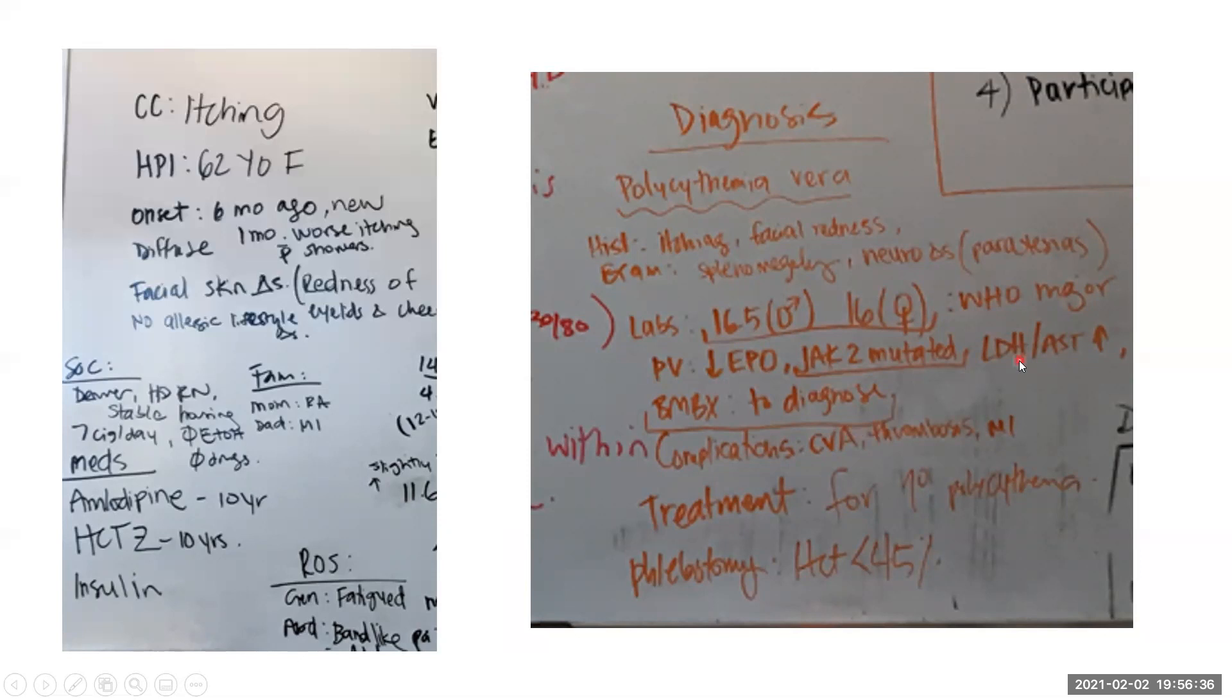Often, LDH and AST levels can be elevated given some hemolysis. The complications related to elevated hemoglobin levels are things like thrombosis, CVA, and MI. And then treatment for primary polycythemia is therapeutic phlebotomy.